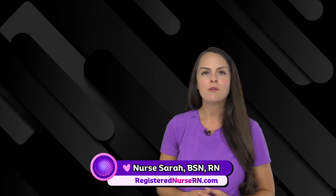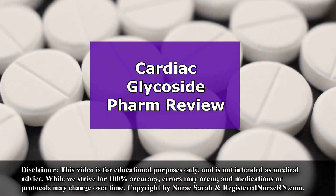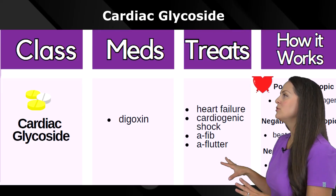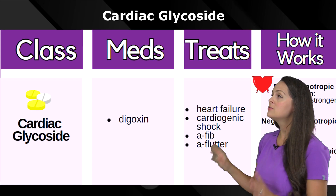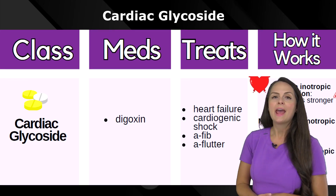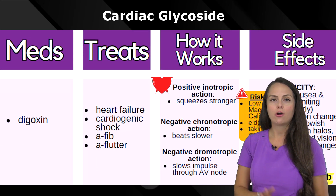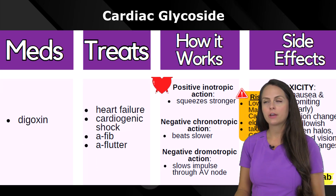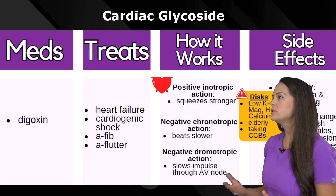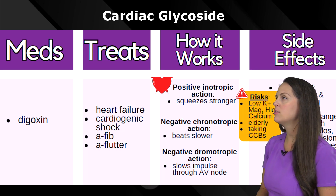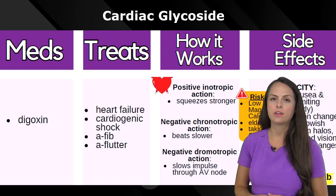Let's do a quick pharm review on cardiac glycosides. One medication included in this group is digoxin, and this medication can be used to treat heart failure, cardiogenic shock, atrial fibrillation, or atrial flutter.